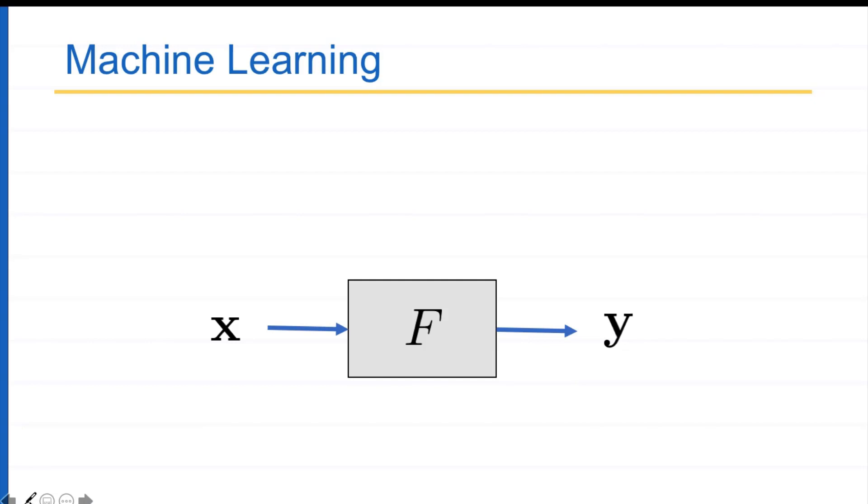So what does it do? This is a model F, this is the input and this is the output. It takes some form of input and it gives some form of output.